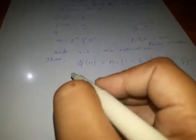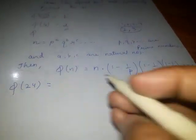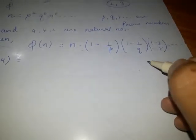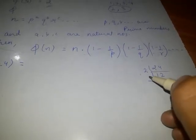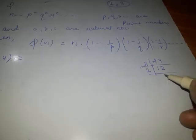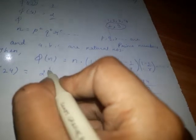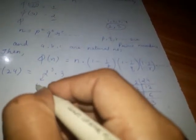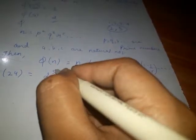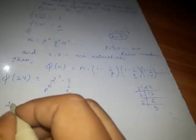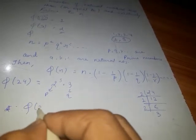Now we can see different examples. Suppose we have to find phi 24. For that we have to first prime factorize it. If we prime factorize it, we get 2 cube into 3. So here we can say p is 2 and q is 3.